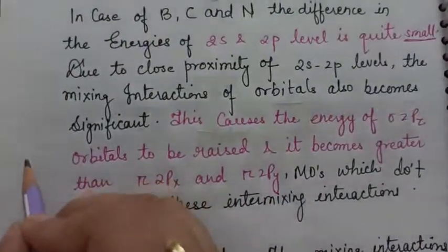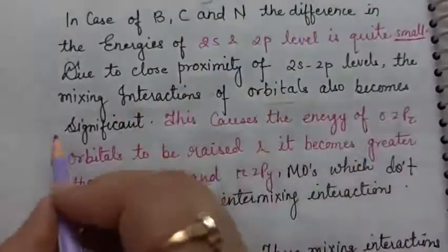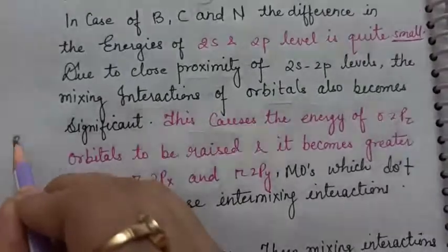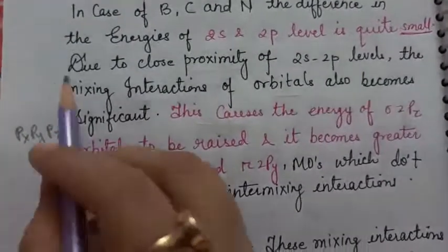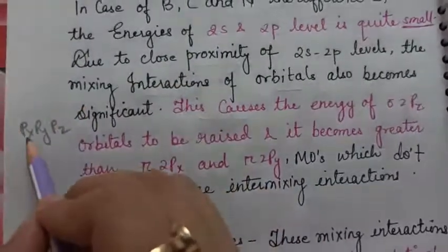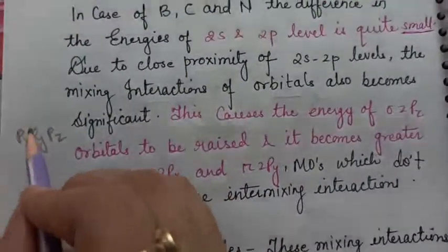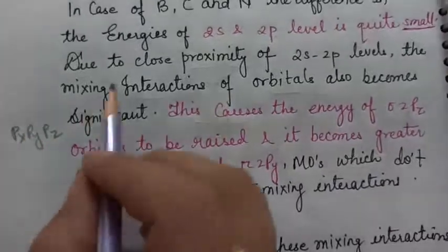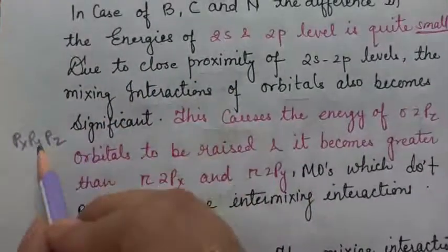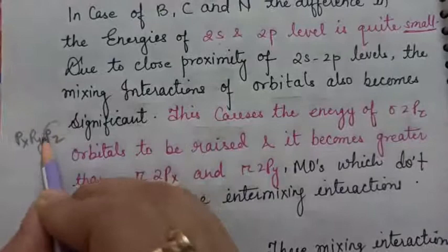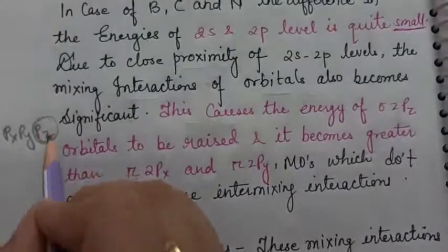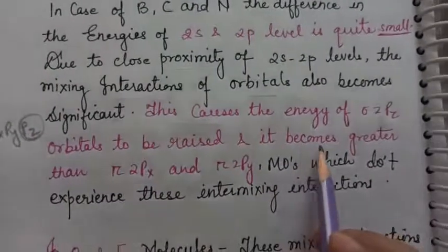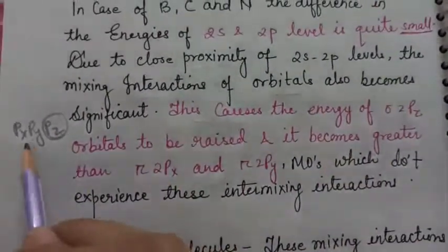So what happens when the orbitals are mixed? In the case of boron carbon nitrogen, the orbitals are 2px, 2py, 2pz. I have written 2, but by default we know that the second level is going on. So what I have said is that the pz, in the time of mixing, the energy of sigma 2pz is increased, and it is increased more than px and py.